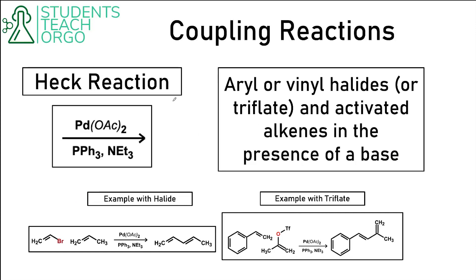In the Heck reaction, we use an aryl or vinyl halide and an activated alkene, and these two pieces will become coupled in the reaction. A vinyl halide is any halide attached to a double bond. An example of an aryl halide would be a bromine attached to benzene. For these metal coupling reactions, it's really important that the halide or triflate being used is either vinyl or aryl.